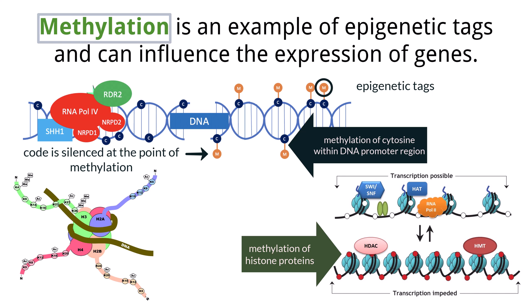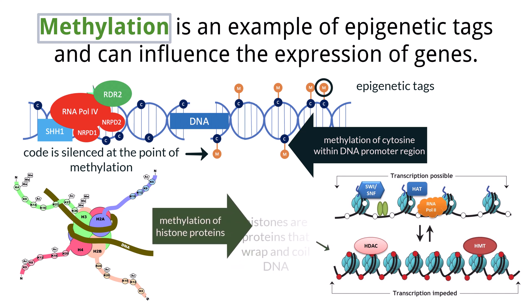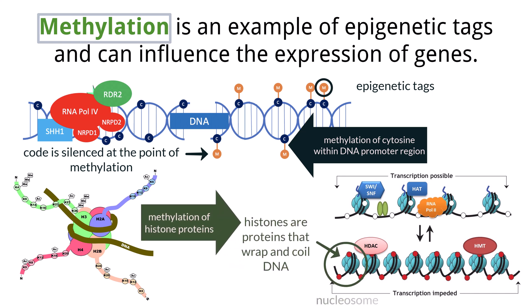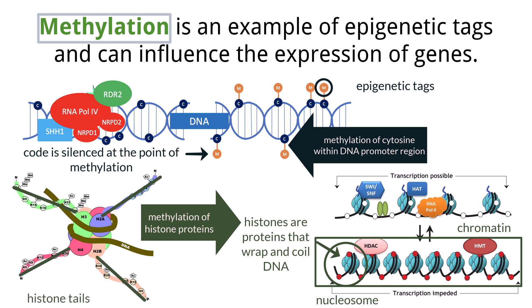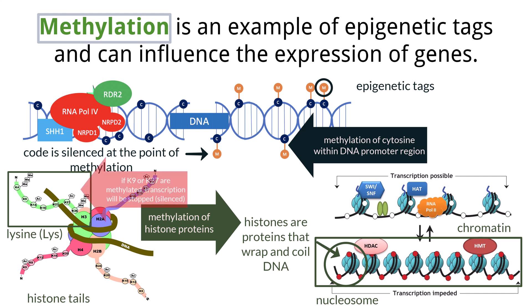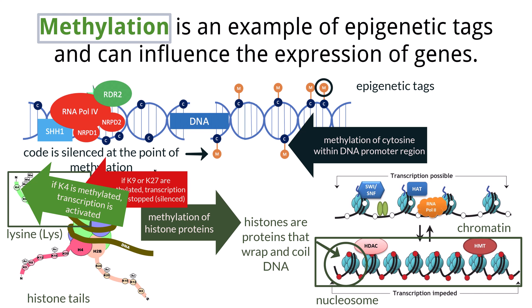Methylation can also occur in the histone proteins. Histones are proteins that have DNA wrapped around them — this is called a nucleosome — and long chains of nucleosomes make chromatin. There are amino acid sequences that form histone tails that protrude outward from the histone complex. Lysine, an amino acid, exists in many positions along the tail of a histone called histone 3, or H3. Depending on where the methylation of lysine occurs, transcription can be silenced or activated. If lysine at position 9 or 27 is methylated, transcription is stopped. But if lysine at position 4 is methylated, transcription will be activated.